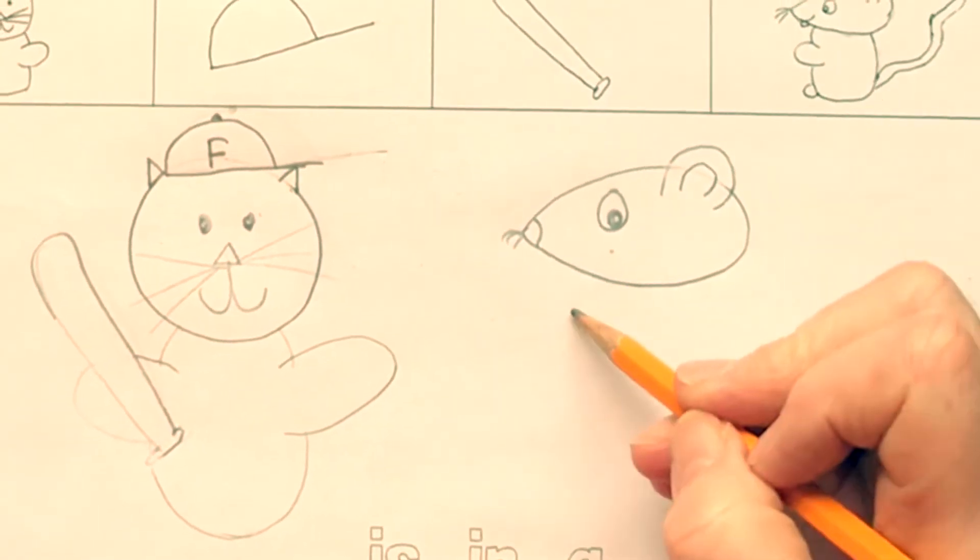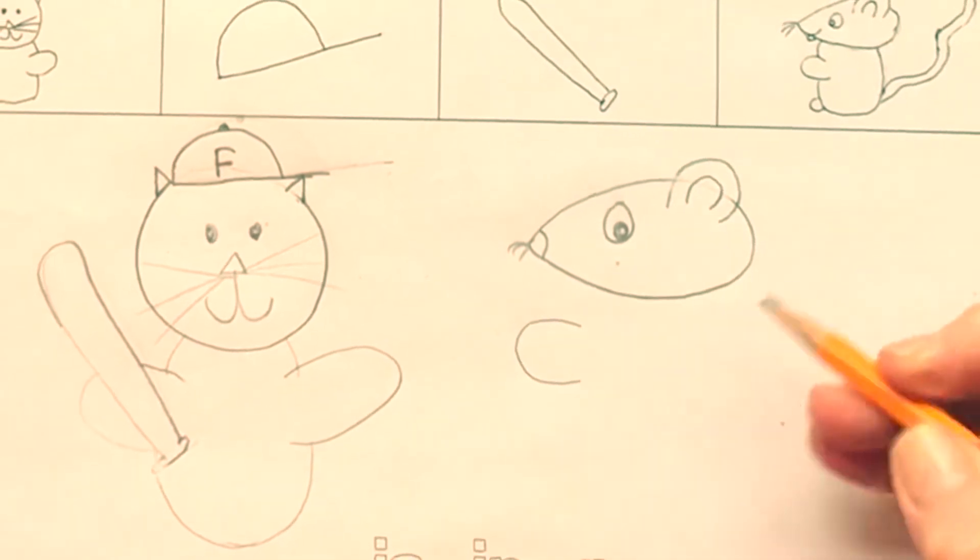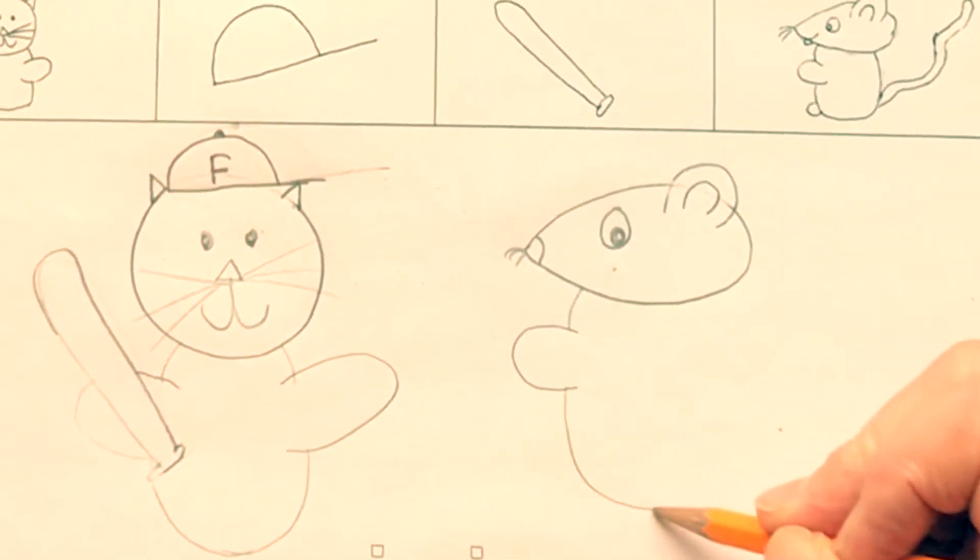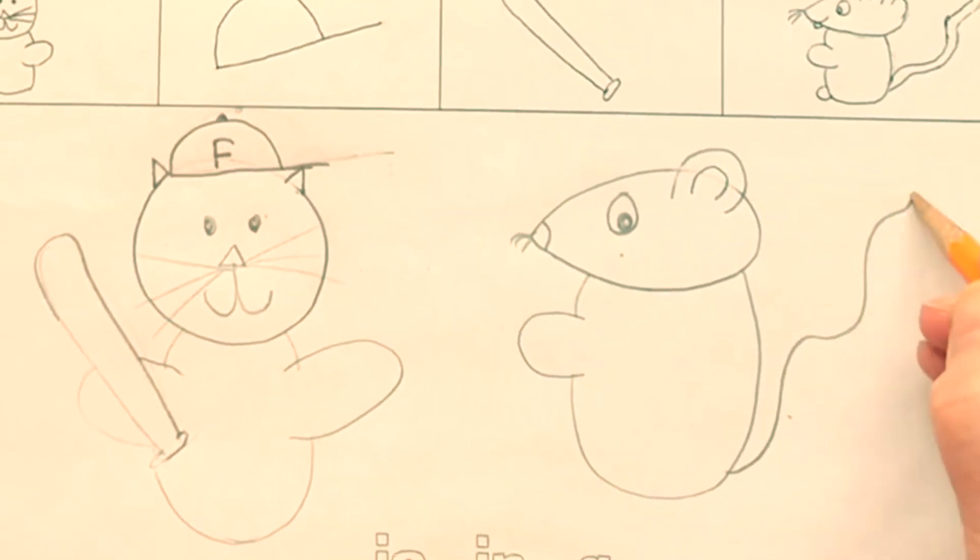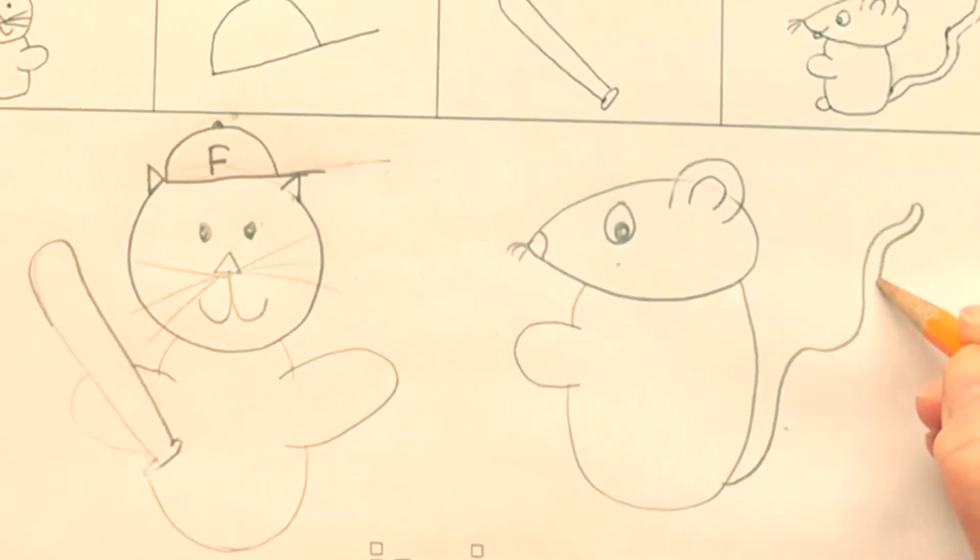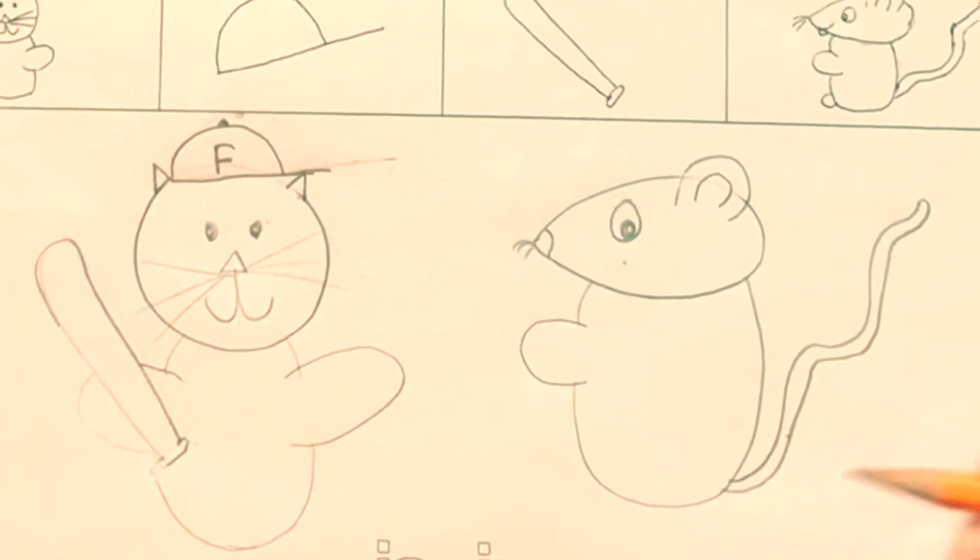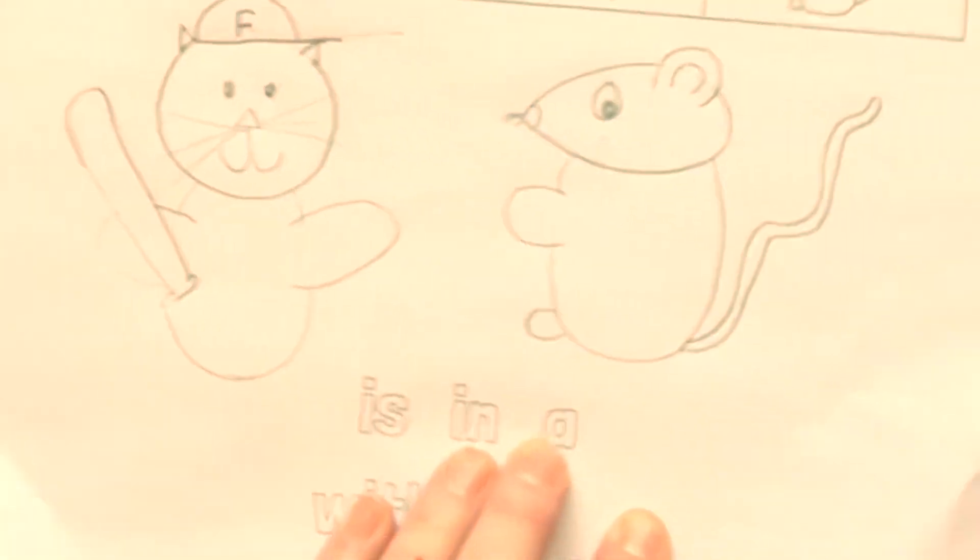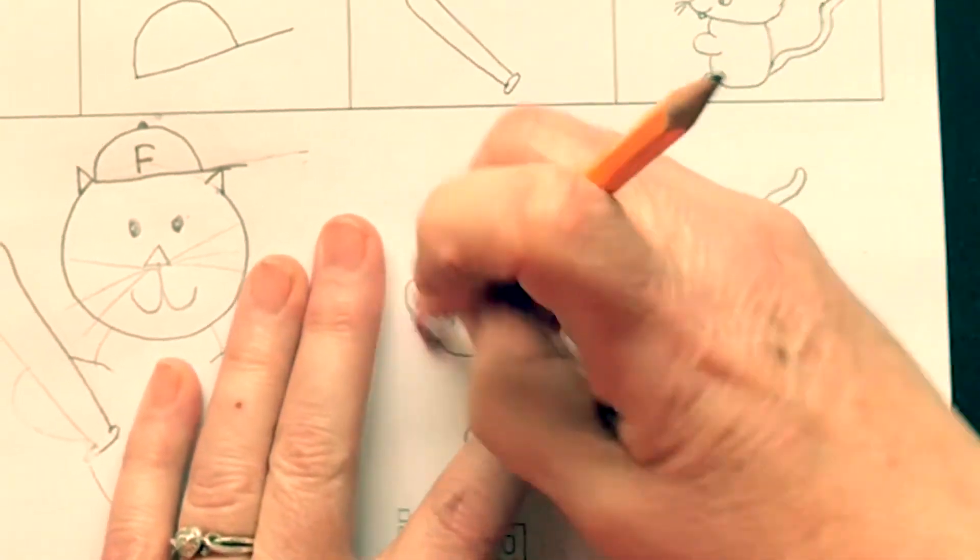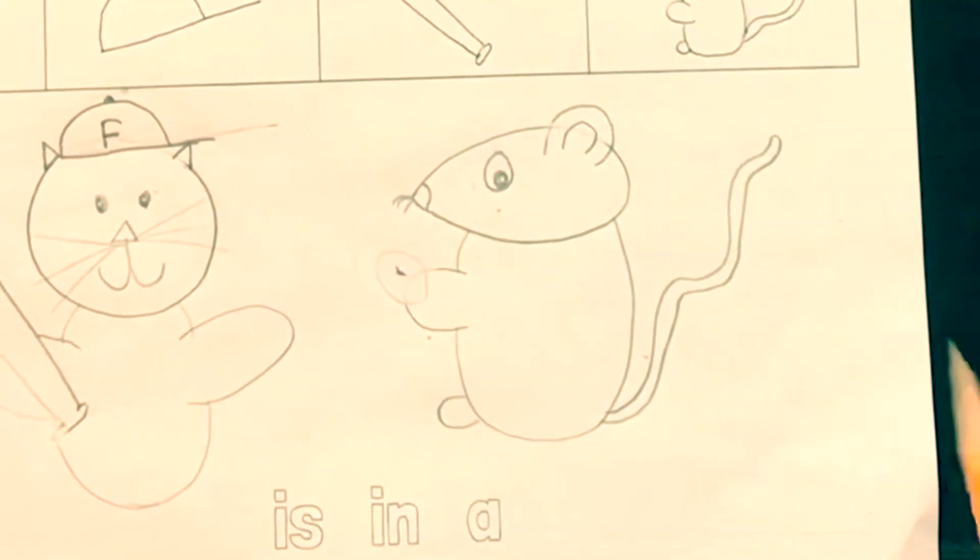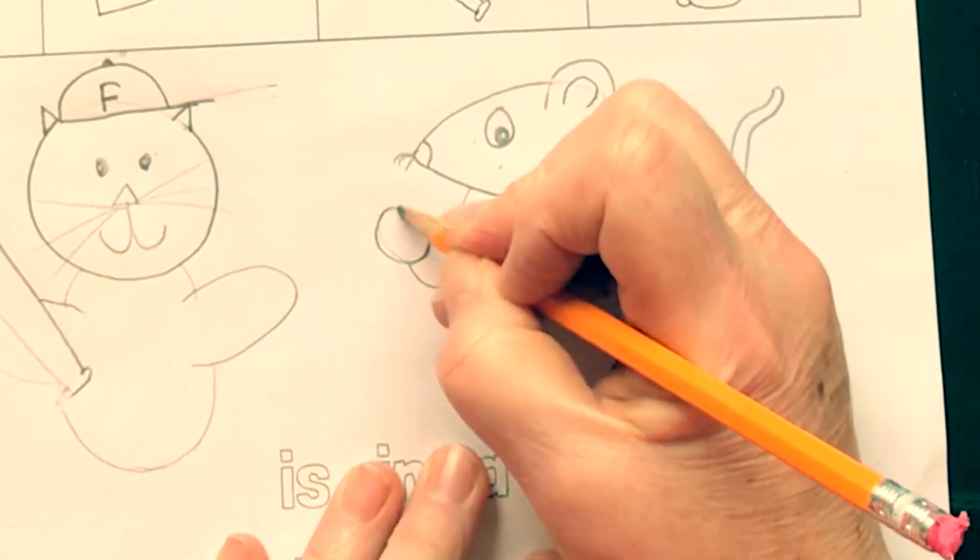We'll erase the line in there and make an inside ear. And then let's make his arm ready to pitch the ball. And then his body. He's a fat rat. And make his tail, make a squiggly tail. That's really long. And then trace back down to it and his foot. Now let's give him a ball to be ready to pitch.